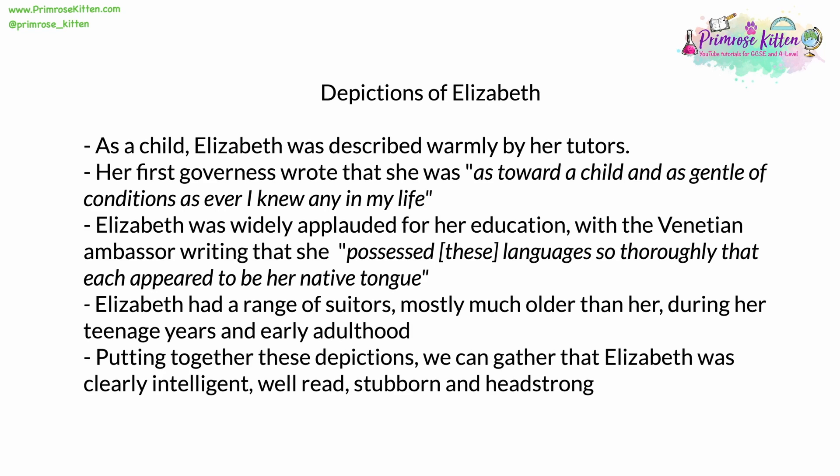An education of this level and fluency, especially among girls, would have been unusual for the time. In her younger years, Elizabeth had a range of suitors — people wanting to marry her. Most of these were much older than her and wanted to marry her for political reasons or for power. Putting together these depictions, we can build a picture: Elizabeth was clearly intelligent, well-read, stubborn, and headstrong — qualities that would become even more apparent as her reign as queen continued.